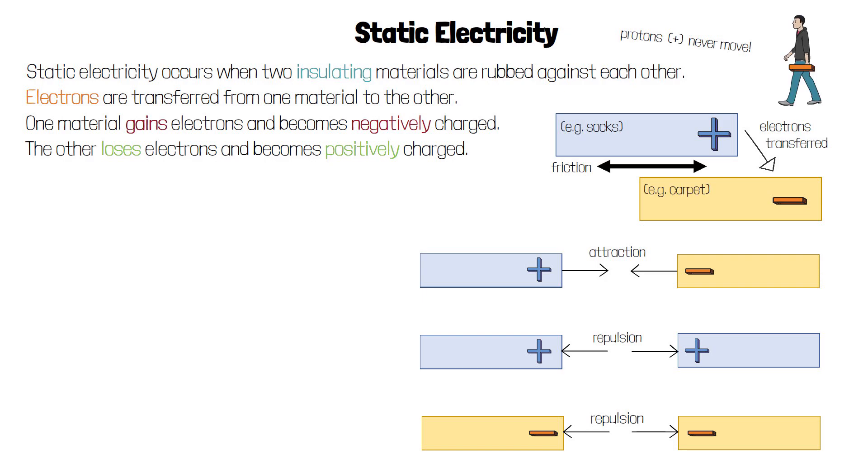If your socks or shoes are made of an insulating material and you walk along another insulating material, such as carpet, electrons can be transferred from your socks to the carpet. Because you've lost electrons, you become positively charged.